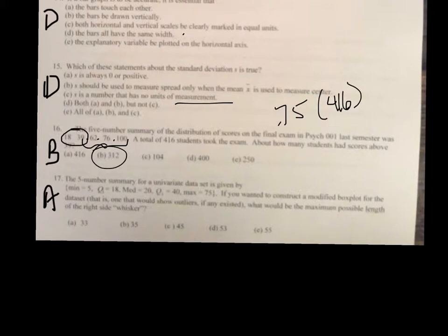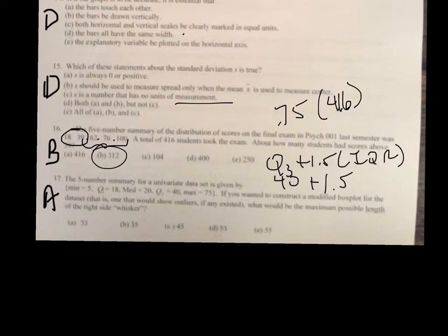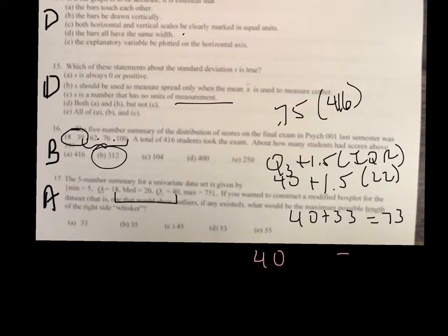And then, finally, on number 17, the five-number summary, what would be the maximum possible length of the right-side whisker? Well, basically, that tells you you're looking for outliers. Remember, outliers to the right would be Q3 plus 1.5 times the IQR. Well, in this case, Q3 is 40 plus 1.5. And the IQR in this case is Q3 minus Q1. So, 40 minus 18, which is 22. And then, one and a half of that would be 33. So, 40 plus 33 would give you 73. So, if you from your Q3, which is 40, out to 73, that's a distance. So, you'd have a whisker about that. So, that would be a length of 33, which is A.